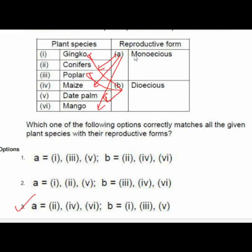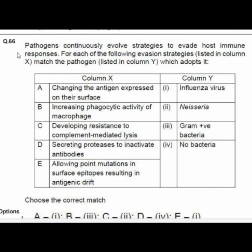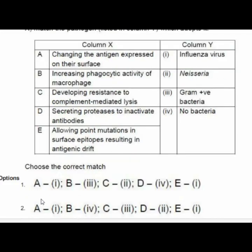Question 66: Pathogens continuously evolve strategies to evade host immune responses. Match evasion strategies in column X with the protein in column Y that adopts it. Option 2 is correct: A matches with 1st; B matches with 4th; C matches with 3rd; D matches with 2nd; and E matches with 1st.